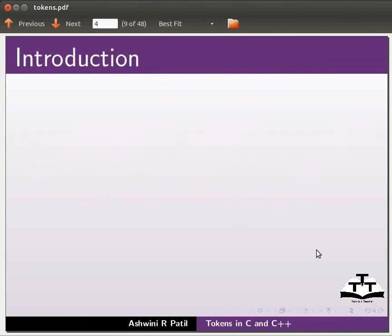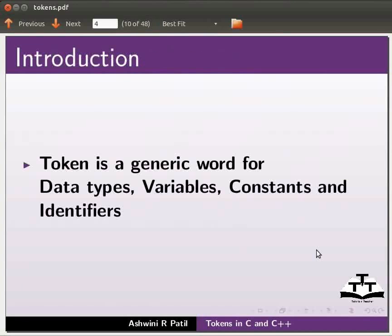Let's start with an introduction. Token is a generic word for data types, variables, constants, and identifiers.